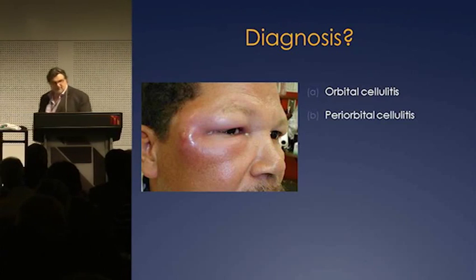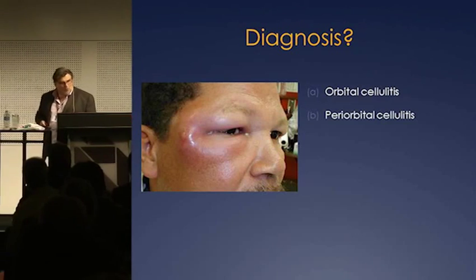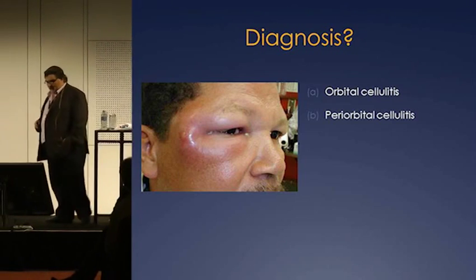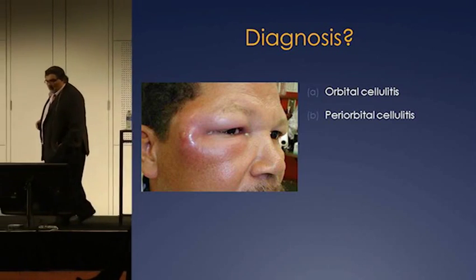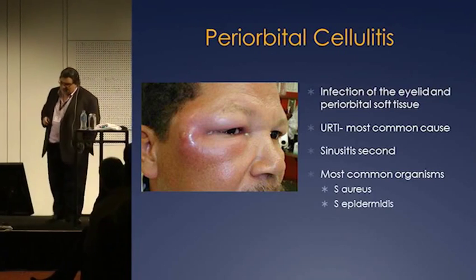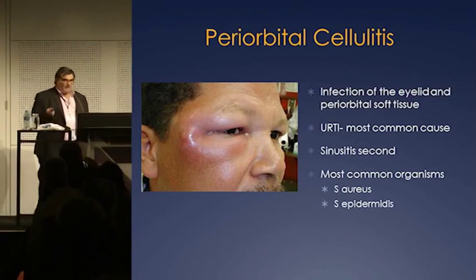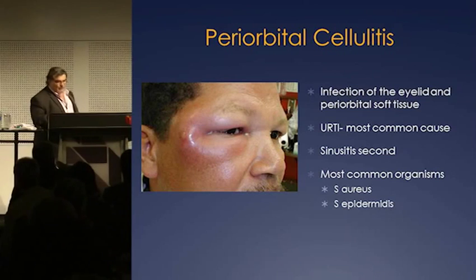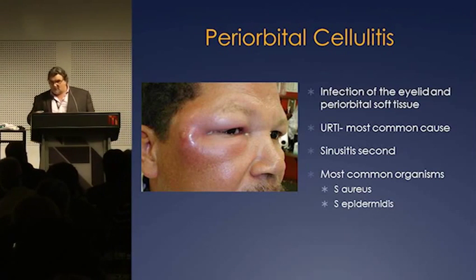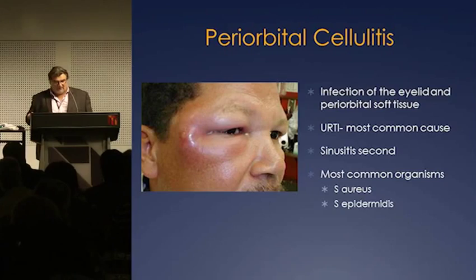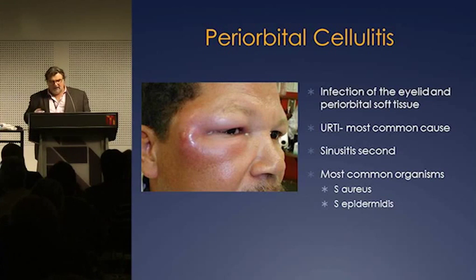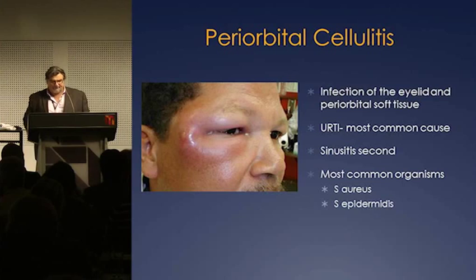Who thinks this is orbital cellulitis? Who thinks this is periorbital cellulitis? This is definitely periorbital cellulitis. It's an infection of the eyelid, the periorbital tissues. Usually the most common cause is a recent URTI. Sinus infections can also cause it, and staph aureus is the organism.